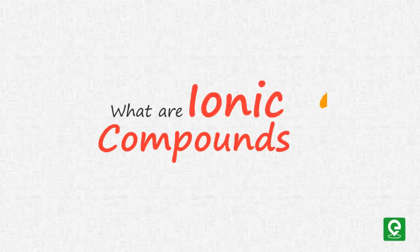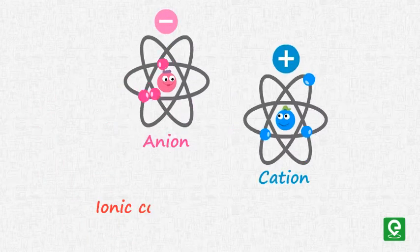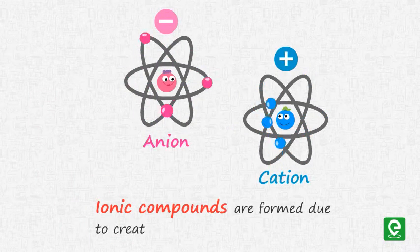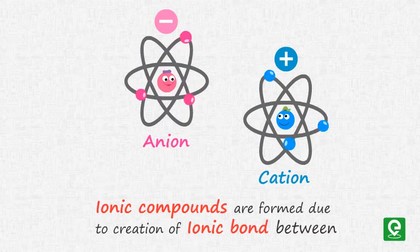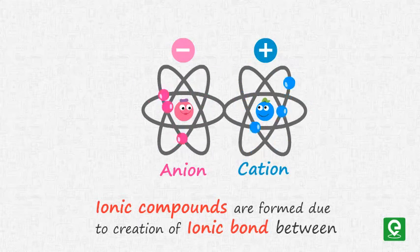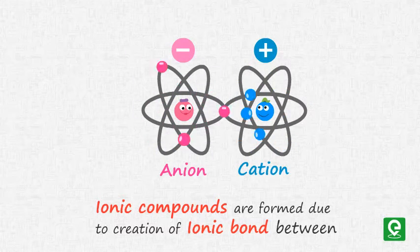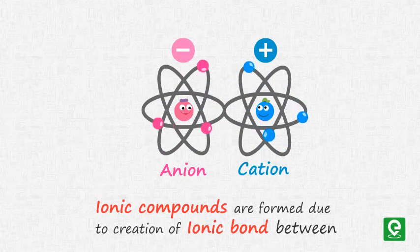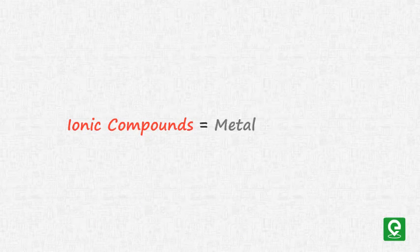What are ionic compounds? Ionic compounds are formed due to creation of an ionic bond, which is the electrostatic attraction between a positively charged cation and a negatively charged anion. Ionic compounds are generally made up of a metal and a non-metal.